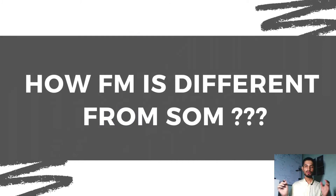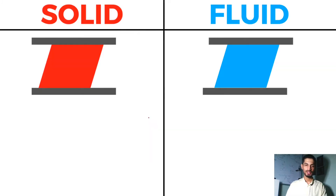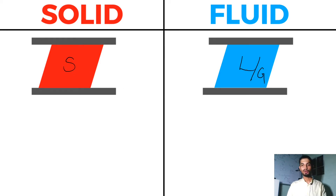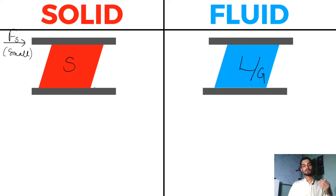Now let's talk about how fluid mechanics is different from strength of materials. If I'm applying some force — let's say this is my solid and I'm applying some shear force on it — there are two plates. Between them I have put solid in the first case and liquid and gas in another case. There is a top plate on which I apply some shear force, and that force is very small, so I might not see any deformation at all.